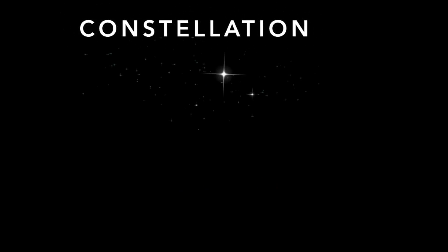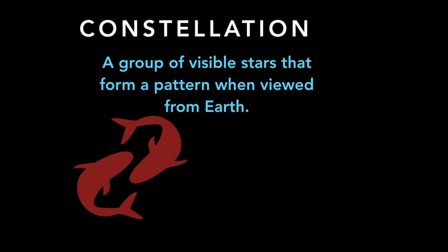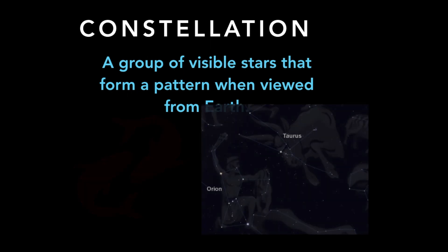What is a constellation? A constellation is a group of visible stars that form a pattern when viewed from Earth. This may take the pattern of an animal, a human, and objects or mythological creatures.